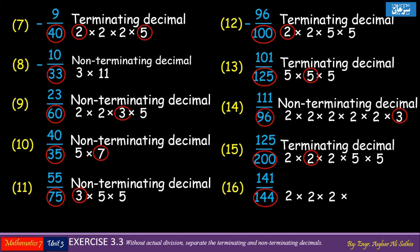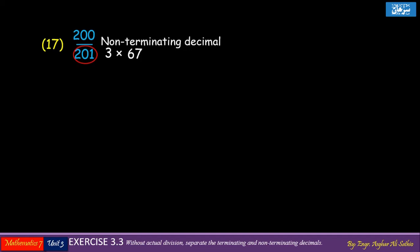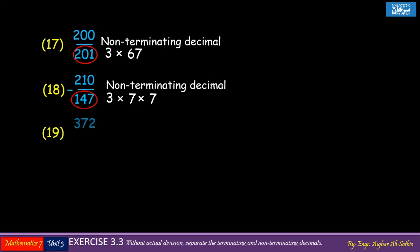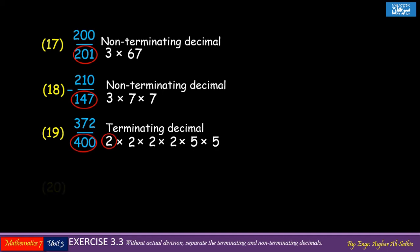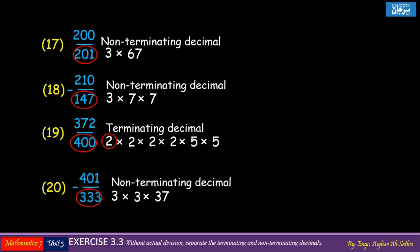Problem number 16: 3 is available in the prime factors of the denominator 144, so it is a non-terminating decimal. Similarly, problem number 17 is also a non-terminating decimal. Problem number 18 is also a non-terminating decimal due to factors 3 and 7. Problem number 19 is a terminating decimal due to factors 2 and 5 only. Problem number 20 is a non-terminating decimal because no digits 2 or 5 are available in the prime factors of 333.